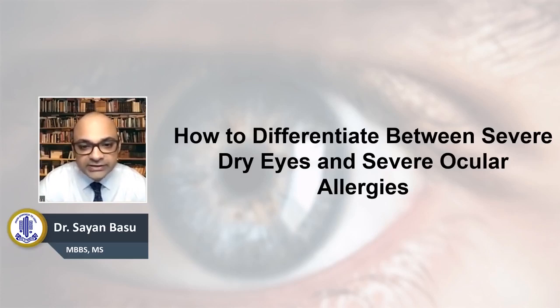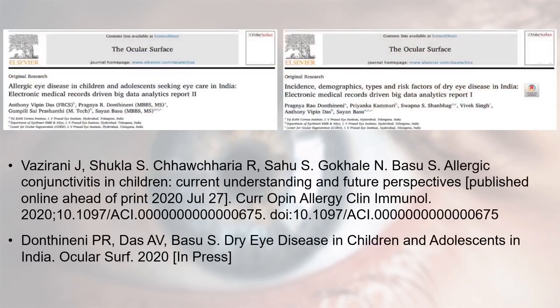Before I go into the specifics, I would really recommend following reading for all of you. These are four seminal publications — three of them are in the Ocular Surface Journal, which is one of the premier ophthalmology research journals, and one is in the journal called Current Opinion in Allergy and Clinical Immunology. Two of them talk about dry eye disease in India in adults as well as in children, and two of them talk about allergic eye disease in India, particularly in children and adolescents. I've provided you with the details of the four publications and you will be able to find these very easily on the internet. I would highly recommend that you read these four articles.